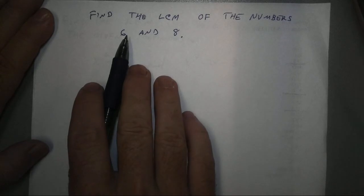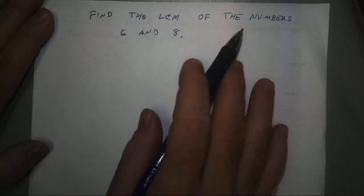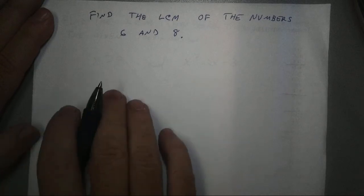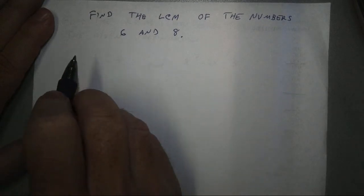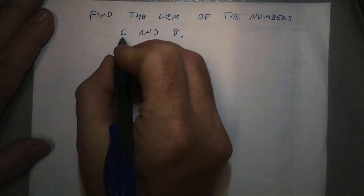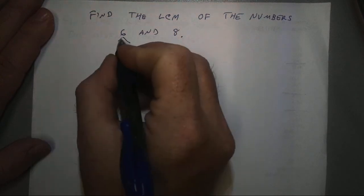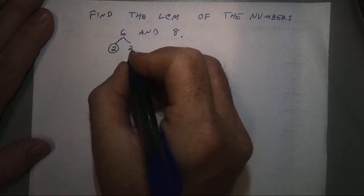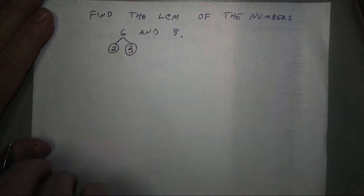To find the least common multiple of the numbers 6 and 8, the easiest way to do this is to find the prime factorization of the numbers and use a factor tree for this. The factors of 6 are 2 and 3, and since 2 and 3 are prime, we're done.